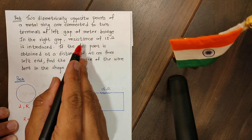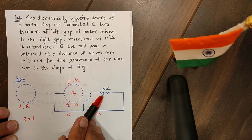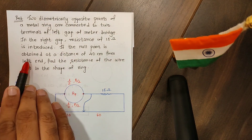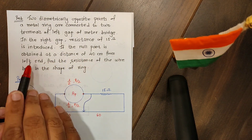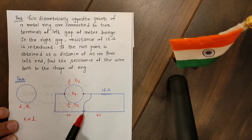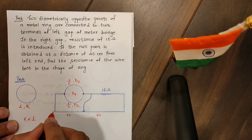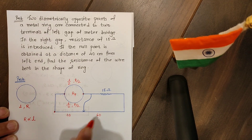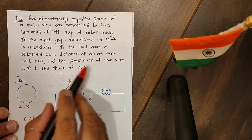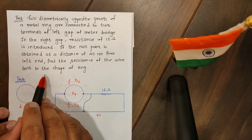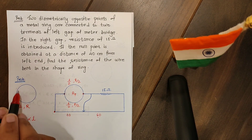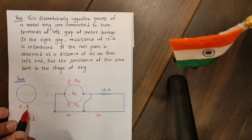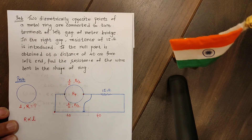In the right gap, a resistance of 15 ohms is introduced. The null point is obtained at a distance of 40 cm from the left end, so the balancing point is 40 cm from the left end, meaning the right end is at a distance of 60 cm. Our task is to find the resistance of the wire bent in the shape of a ring — that is, to find the value of R.